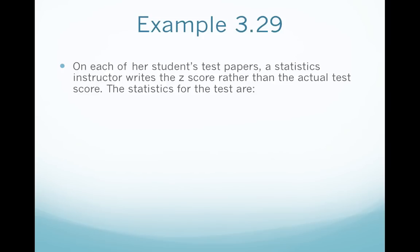Looking at example 3.29: on each of her students' test papers, a statistics instructor writes the z-score rather than the actual test score. So imagine that at the top of each exam, instead of a real test score, there's a z-score. Remember, z-scores are positive and negative numbers — for the most part, 99 to 100% of the z-scores will fall between negative 3 and positive 3. Anything far less than negative 3 or greater than positive 3 is going to be considered an outlier.